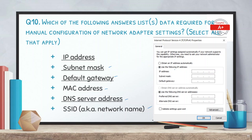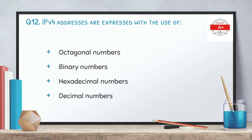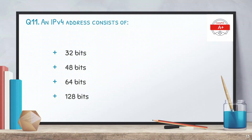You all must have used this — for manual network configuration you need to give the IP address, its subnet mask, its default gateway, and the DNS server. Question number 12: IPv4 addresses are expressed using which type of numbers? The options are octagonal, binary, hexadecimal, and decimal. The correct answer is decimal numbers, such as 192.168.1.10. Question number 11: an IPv4 address consists of how many bits? The options are 32, 48, 64, and 128 bits. The correct answer is 32 bits.